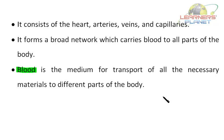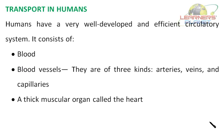Now we will study about transport in humans. Humans have a very well-developed and efficient circulatory system. It consists of blood, blood vessels of three kinds — arteries, veins, and capillaries — and a thick muscular organ called the heart.